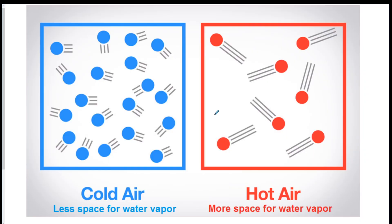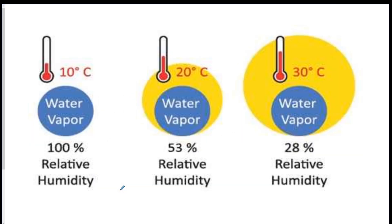Now, on to humidity and air masses. The main thing you need to know is that air temperature that is hotter has more space between the molecules, therefore it can hold more water vapor. Cold air does not have that much space between the molecules, so it has less space to hold water vapor.